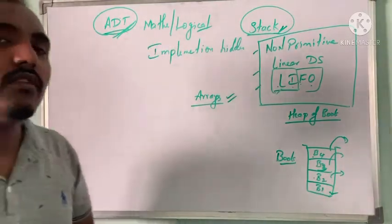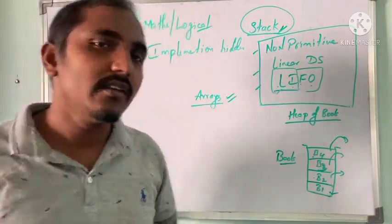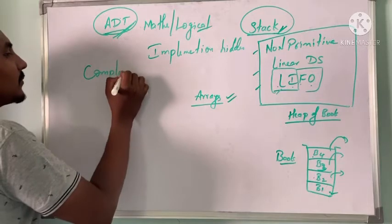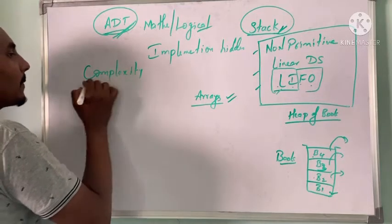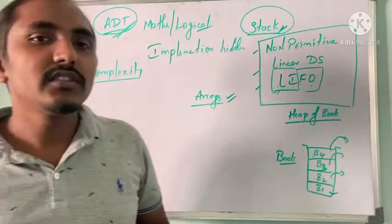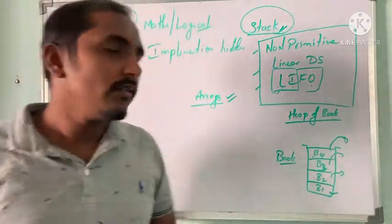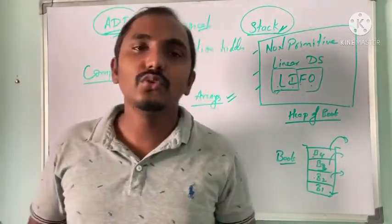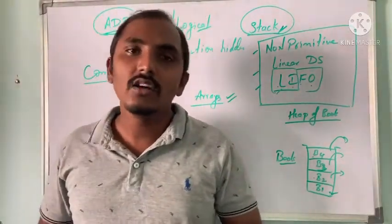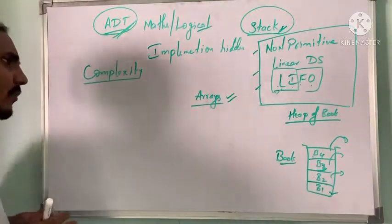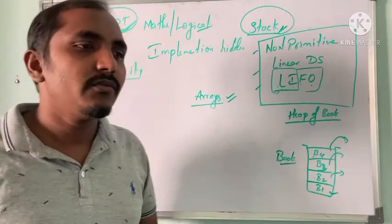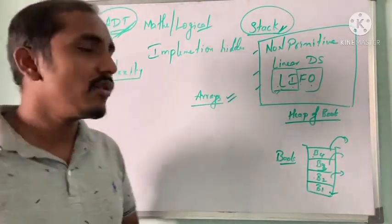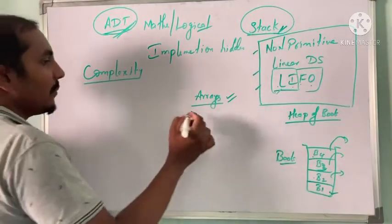This is the information regarding what Abstract Data Type means. From the first chapter we also have other information, like what is complexity. Complexity refers to the complexity of an algorithm. Any step-by-step process to solve any problem is considered an algorithm. For every algorithm, during its execution, it takes some time and some memory.